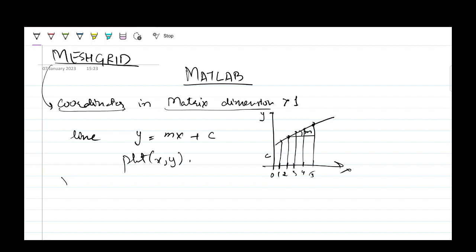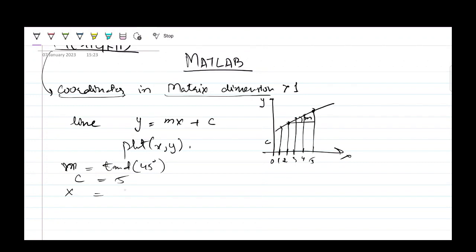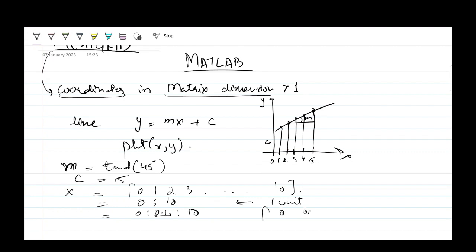To define x, m would be given — let's say tan(45 degrees) — and c is five. You can define x as 0 to 10 with unit spacing, or use finer spacing like 0 to 10 with step 0.1, which makes curves smoother — useful for sine curves or circles.